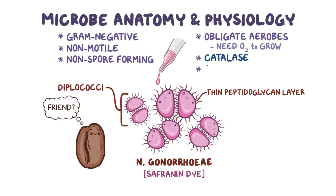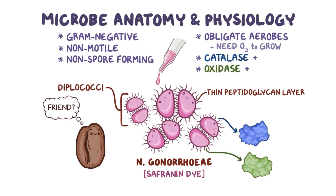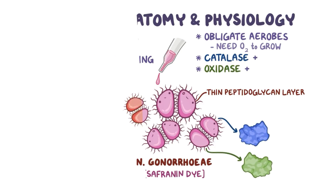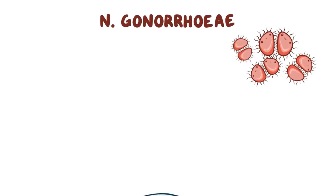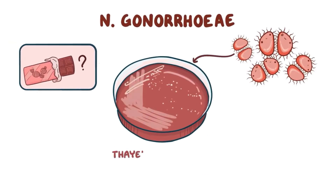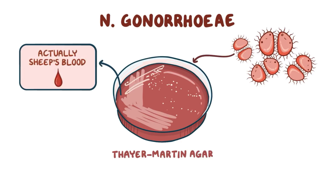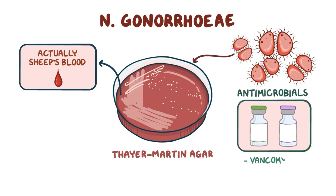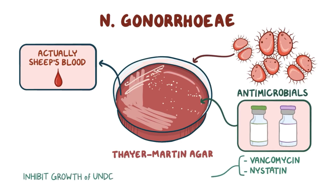Finally, they're catalase and oxidase positive, which means that they produce both of these enzymes. N. gonorrhoeae grows on a special chocolate medium called Thayer-Martin Agar, which mainly consists of sheep blood. Some antimicrobials like vancomycin and nystatin are usually added to the Thayer-Martin Agar to inhibit the possible growth of undesired bacteria or fungi and maximize the growth of Neisseria species.